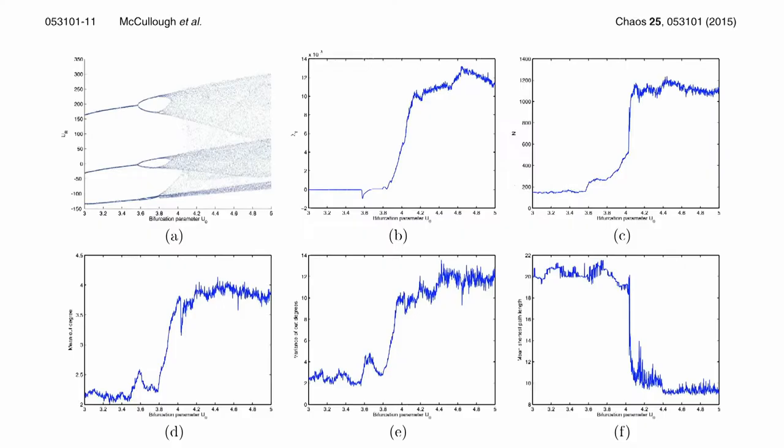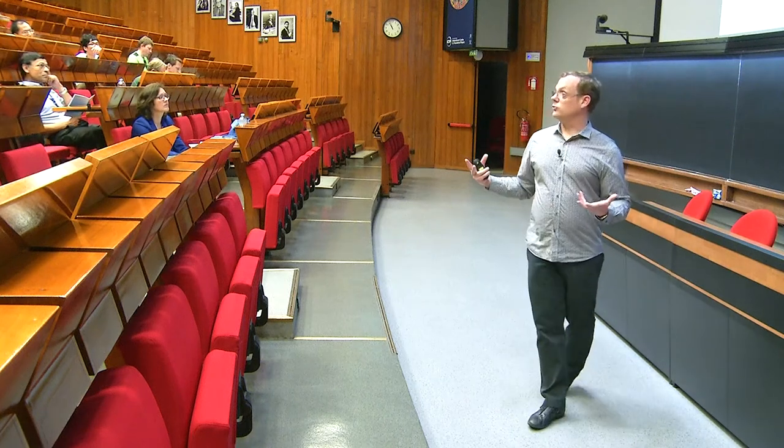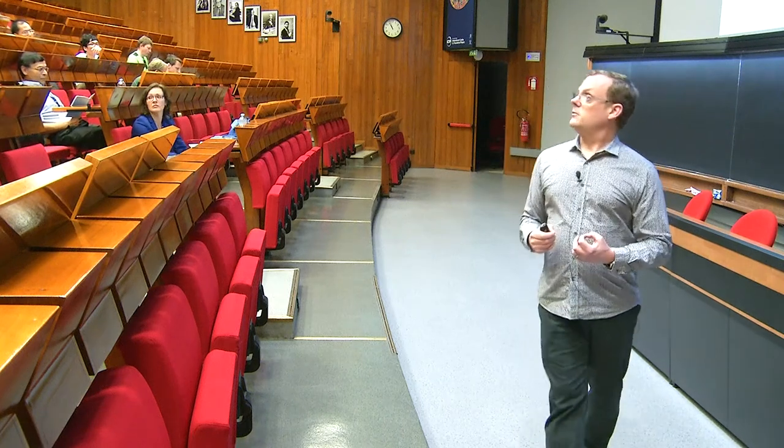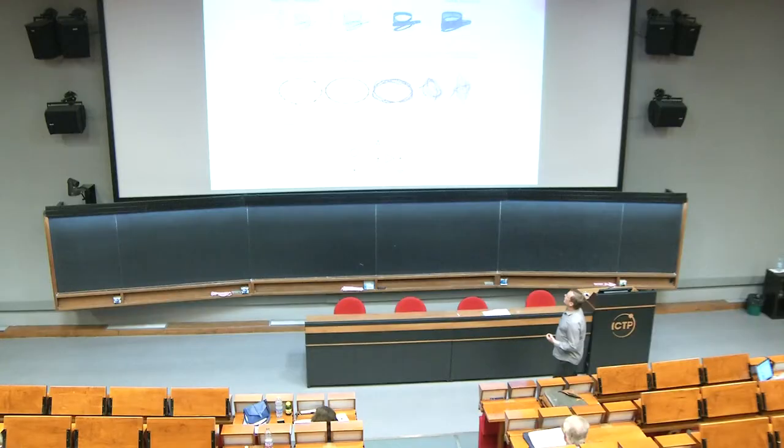If we do this trick, we generate these networks for different types of signals. The number of nodes in the network is now a reflection of the number of permutations, the window size we've chosen. Looking at the system for longer is not going to give us more nodes once we've sampled well enough to have seen what the system will do. It's going to give us better estimates of the transition probabilities between those sequences.